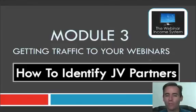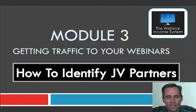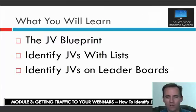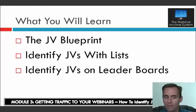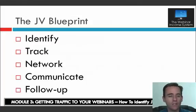Welcome to module three of the webinar income system: getting traffic to your webinars. I'm going to talk about how to identify JV partners — how to find those joint venture partners that you want to do webinars for you. Here's what you're going to learn in this module: the JV blueprint, identifying JVs with mailing lists, and how to identify JVs on leaderboards.